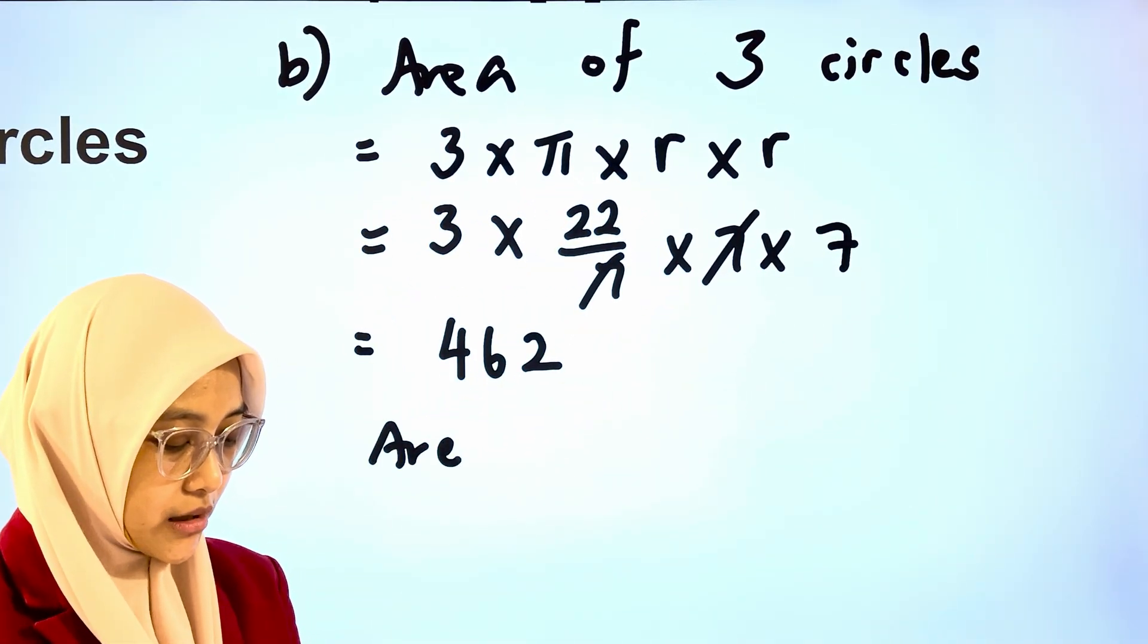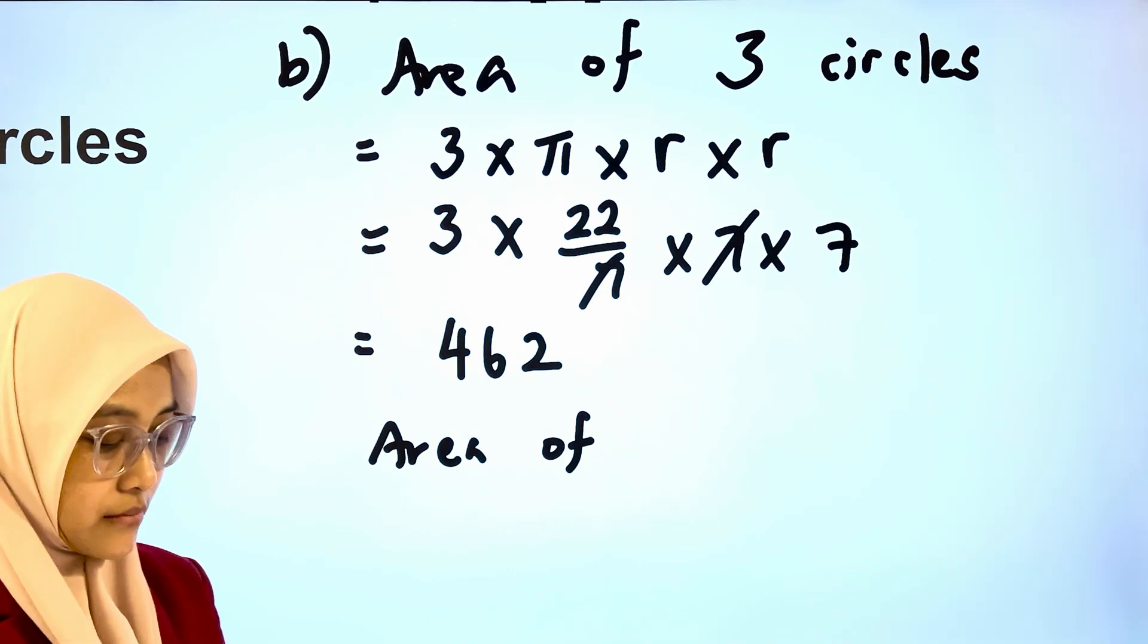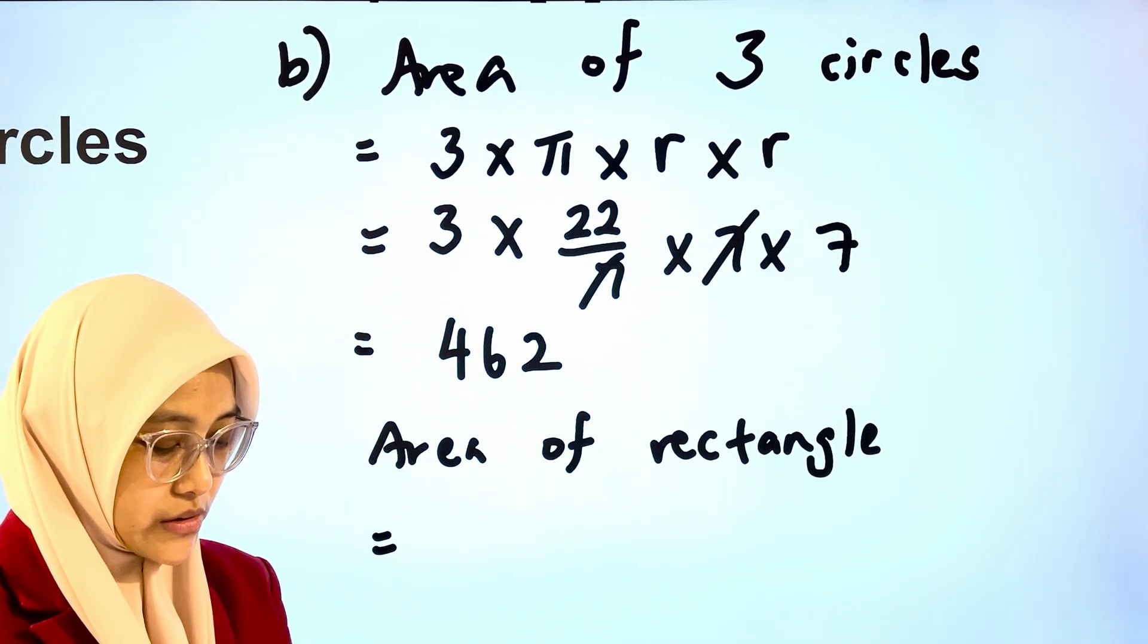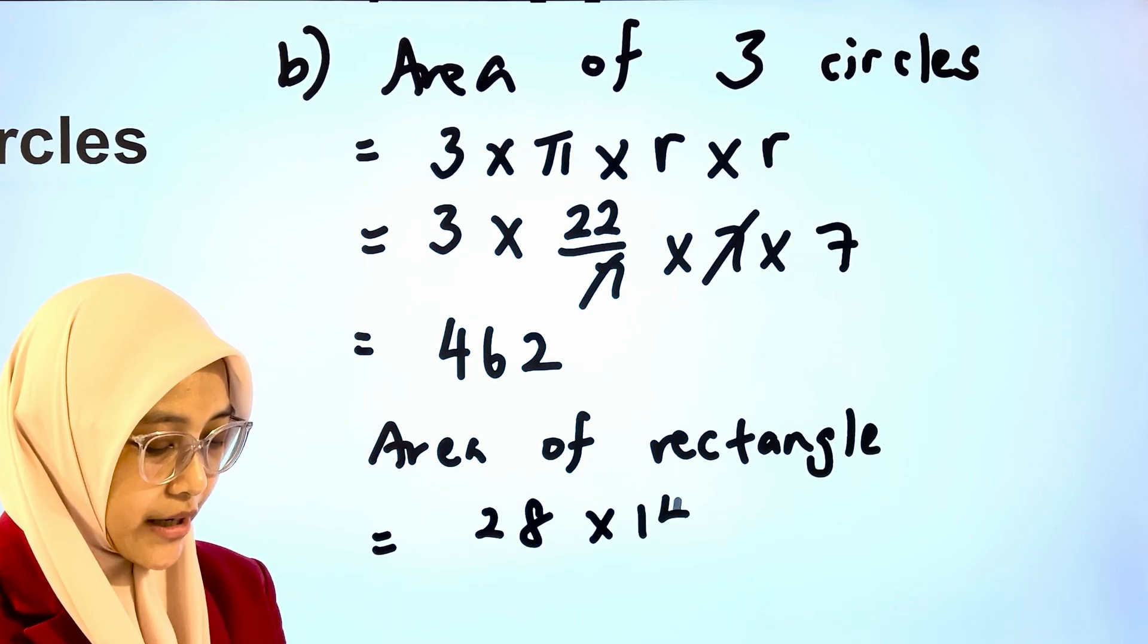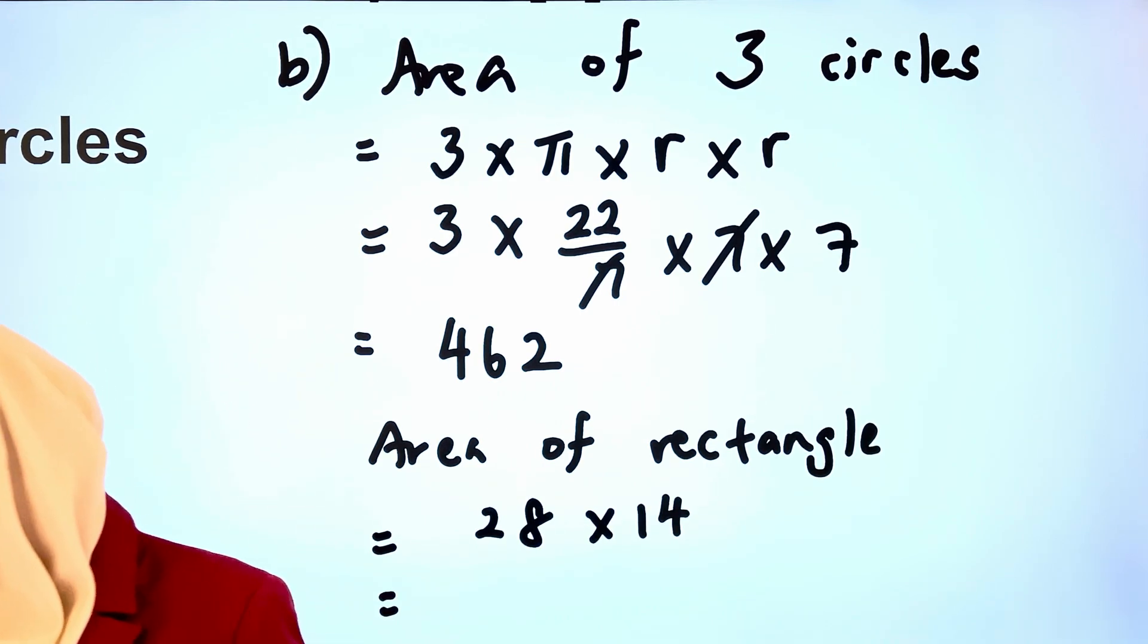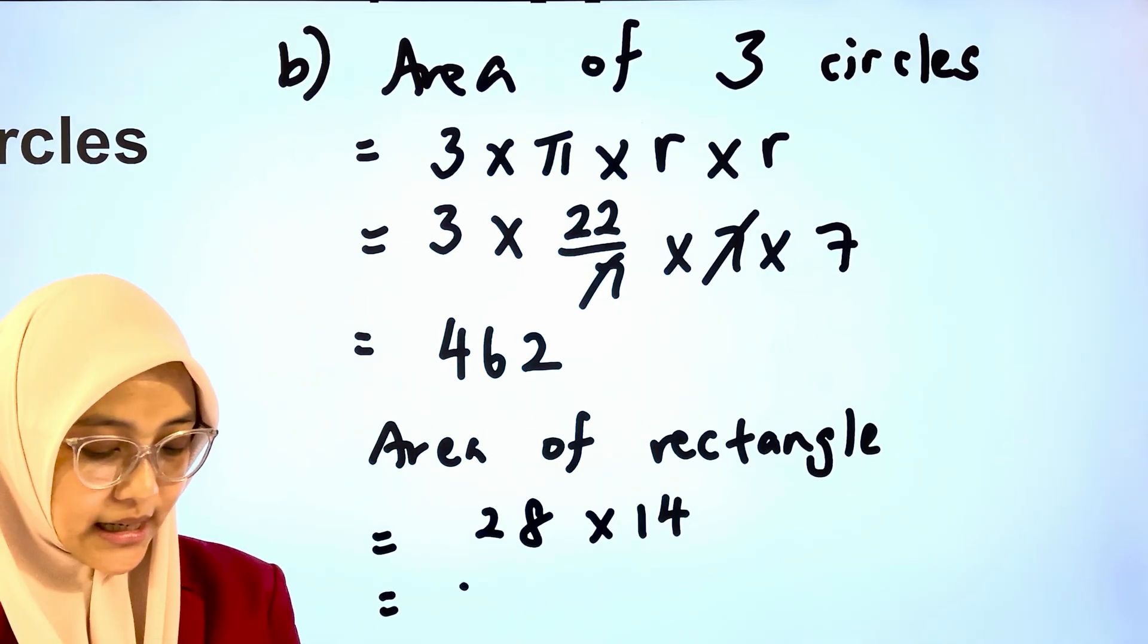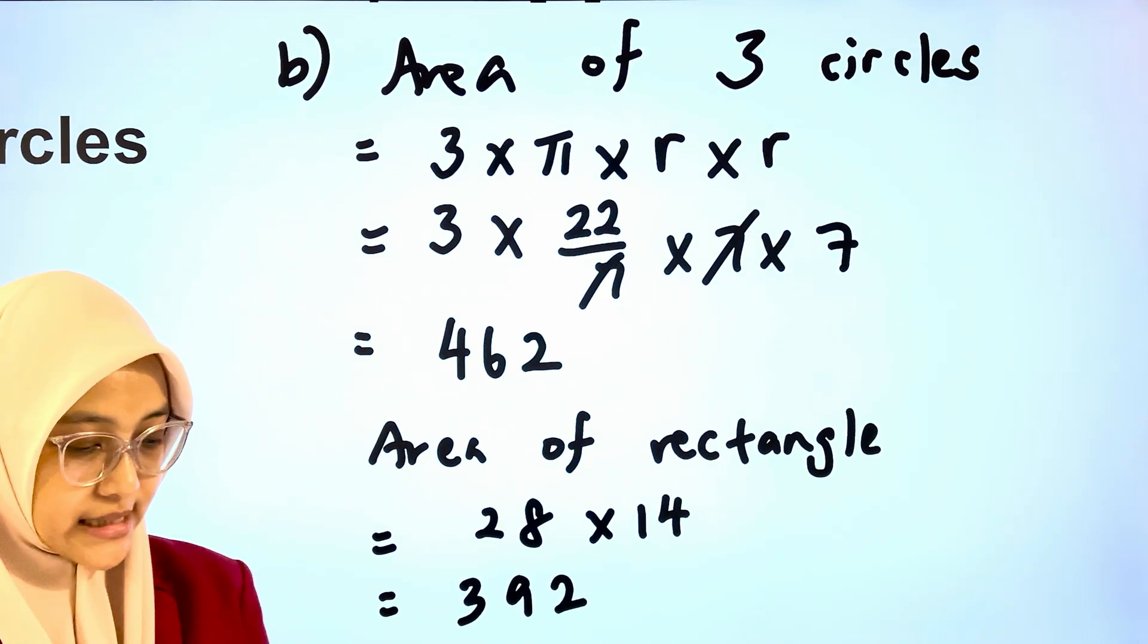Area of rectangle is equal to 28 multiplied by 14. And that gives us 392 square cm.